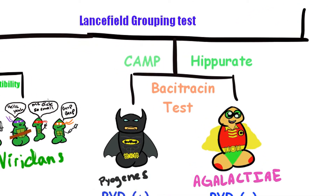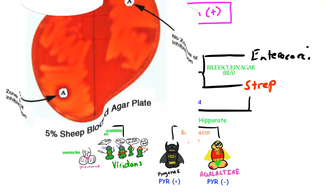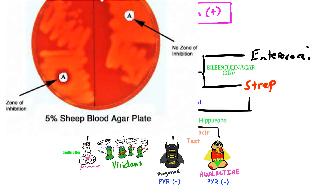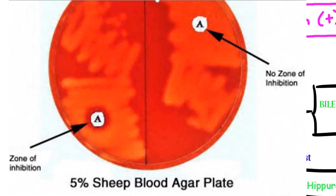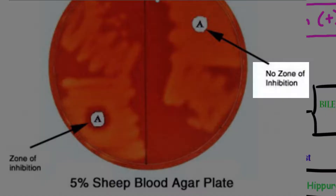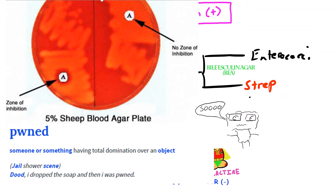We can also use the Bacitracin susceptibility test. Bacitracin is a bactericidal drug that's too toxic for systemic use but can be used superficially on the skin. It differentiates GBS from GAS, and is technically used as a fast way to detect specifically GAS. In the case of Streptococcus agalactiae, it's Bacitracin-resistant — there's no zone of inhibition around the paper Bacitracin disc, so it won't be inhibited by the antibiotic.